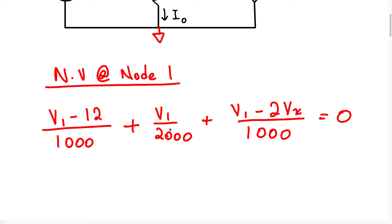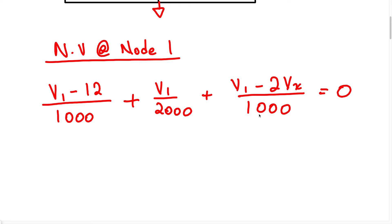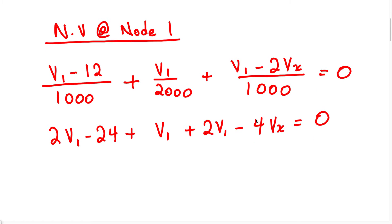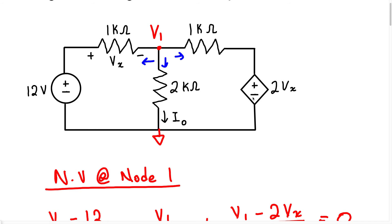Let's simplify this. We know 2000 is the LCD, so we multiply each term by 2000. That gives us 2V1 minus 24 plus V1 plus 2V1 minus 4Vx, all equal to 0. When we simplify, we get 5V1 minus 4Vx equals positive 24. I'm going to call this equation 1. But because we have this dependent source, we must also write a constraint equation.